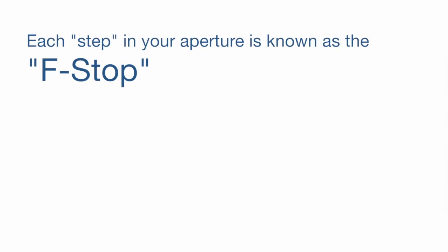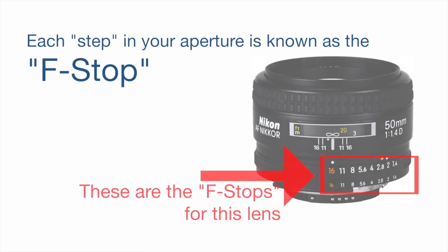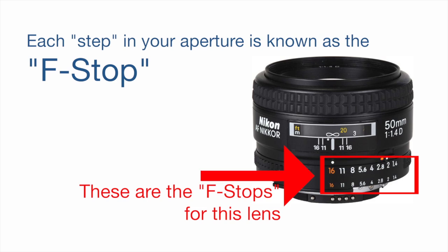Before we get into the different types of lenses, let me explain something that's built into every camera lens, and that's called aperture. Aperture is controlled by the opening and closing of multiple blades inside of your lens. Each step up or down is what's known as an F-stop, and it's represented by the F-stop number on your camera lens.